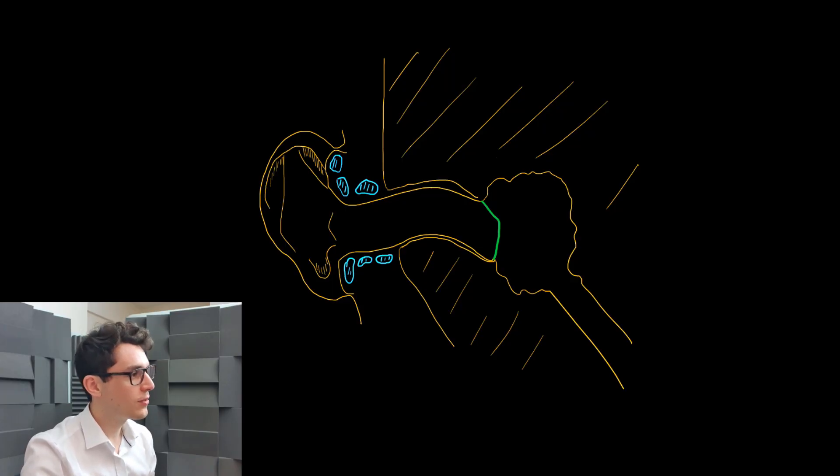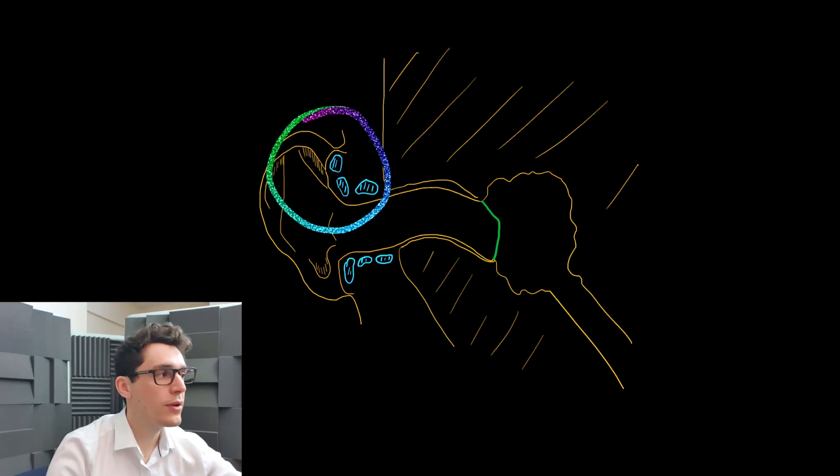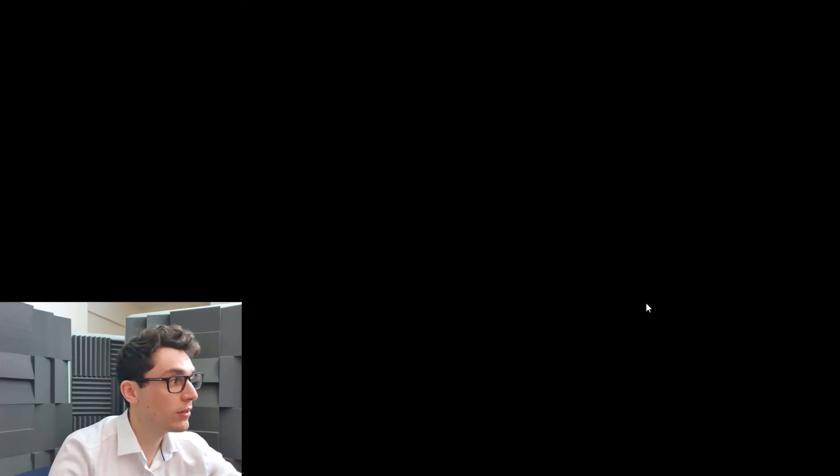What we have here is an anatomical diagram which I drew earlier for another video, and what we're interested in is this portion right here - the outer ear. You can think of it pretty much like a cartilage scaffold with skin on top. However, there is a bit more going on, which is crucial to understanding cauliflower ear.